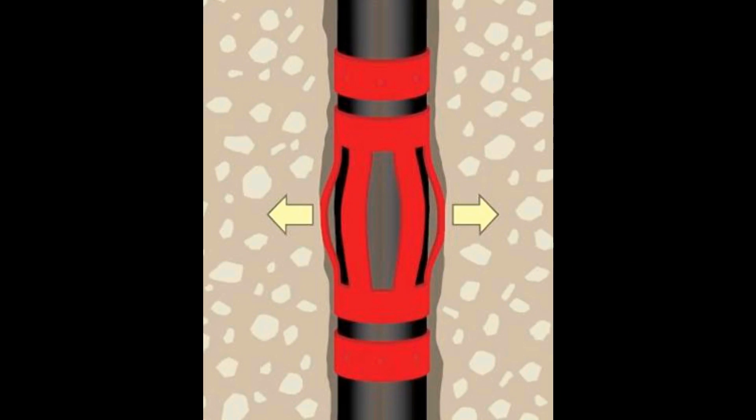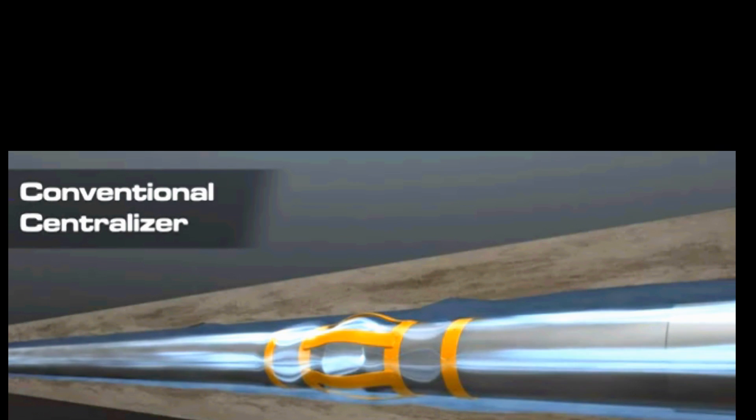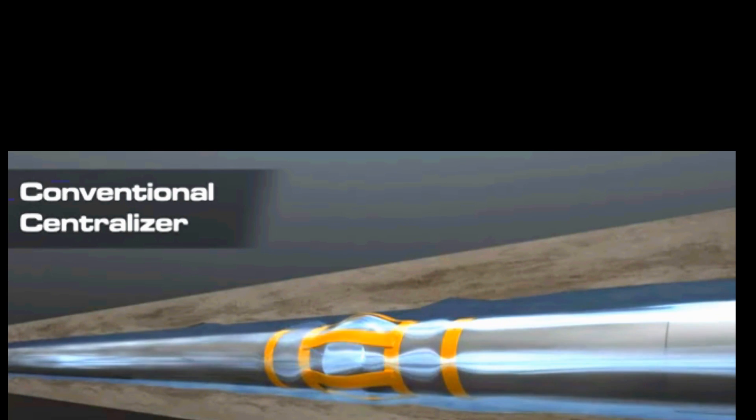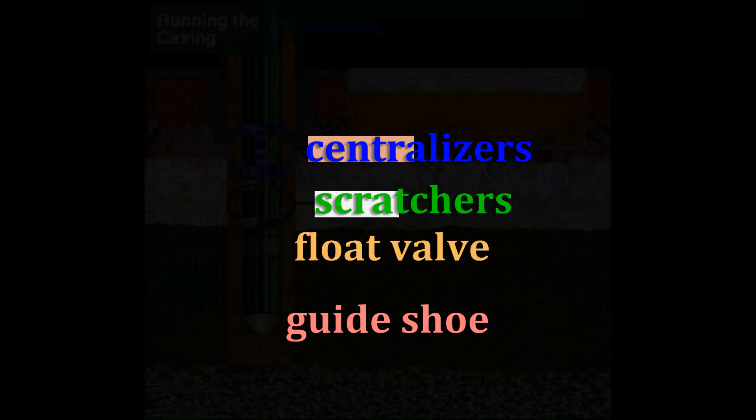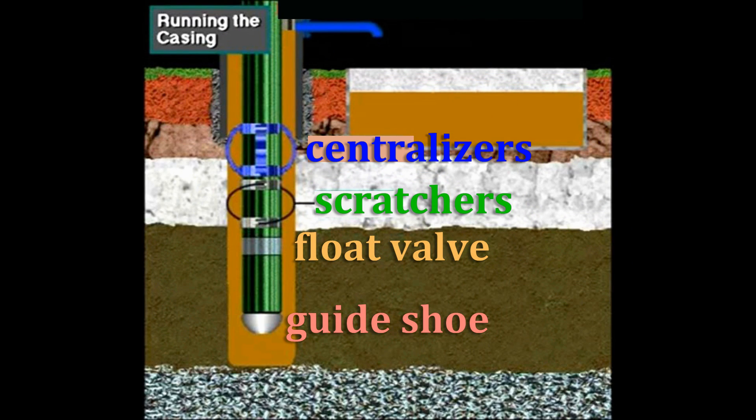Centralization of the pipe is essential because for maximum functionality, the cement sheath must evenly and completely surround the pipe. These are the essential pieces of equipment used in preparation for cementing.